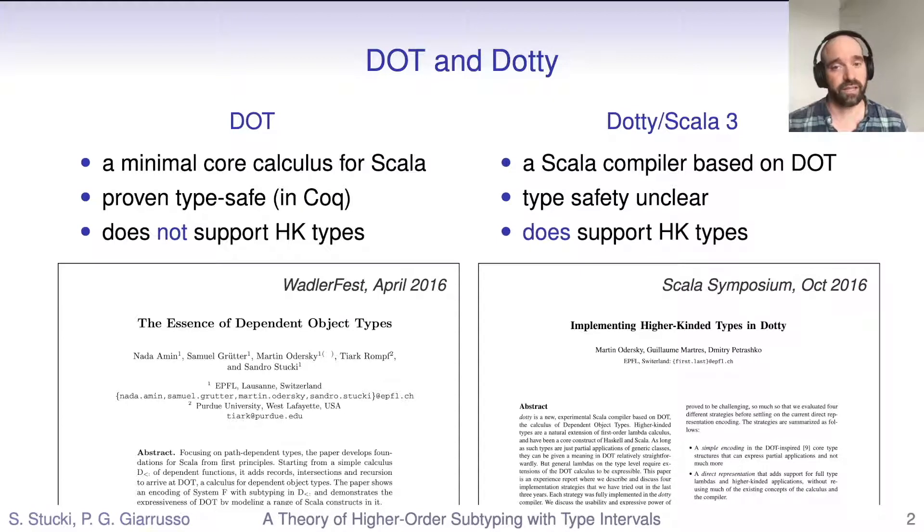One of the problems, though, is that Dot didn't support the rich, hierarchical language of types that Scala supports, but the hope was that these could be encoded in Dot. Unfortunately, that didn't turn out to work. So only a few months after the proof of type safety for Dot had been published, Martin and the other core developers of the Dottie team published an experience report where they outlined different ways in which they had tried to encode hierarchical types into Dot. None of them had worked.